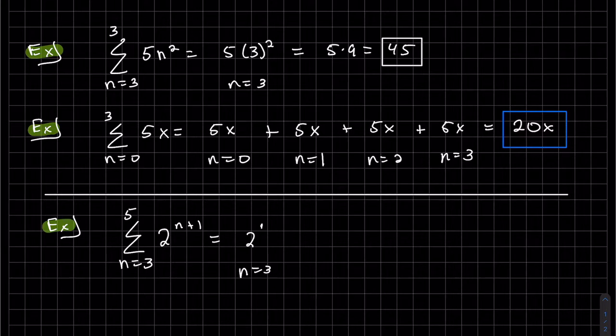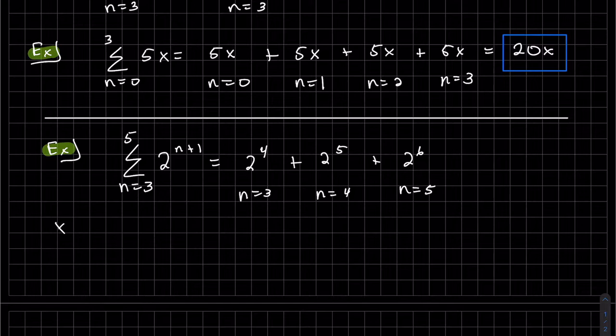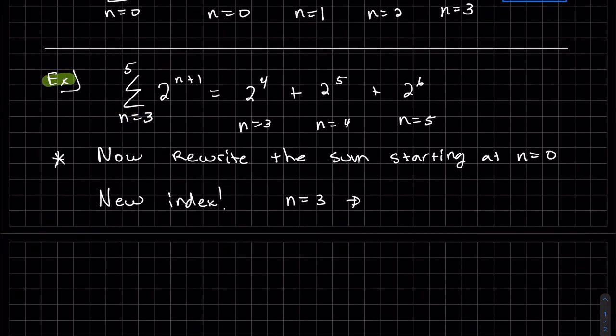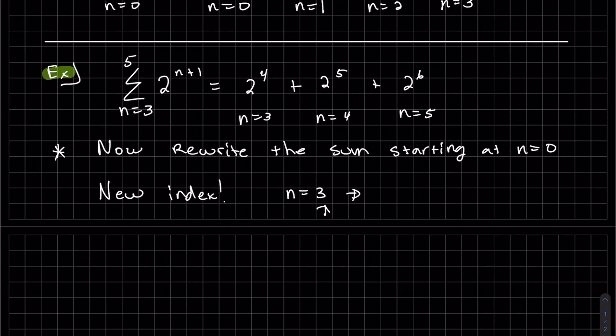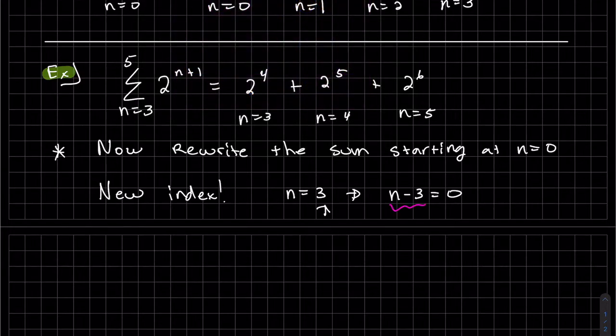So what we're gonna do here is something slightly different than we've been doing. We're gonna take this sum and rewrite it with the sum starting at n equals 0. So we are gonna have to do a substitution and use a new index. So this n equals 3. We want to manipulate it so it starts at 0 instead of 3. So we're gonna subtract out that 3.